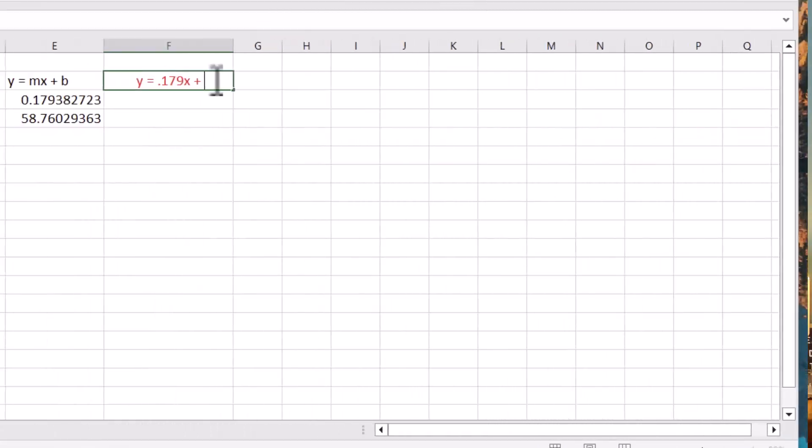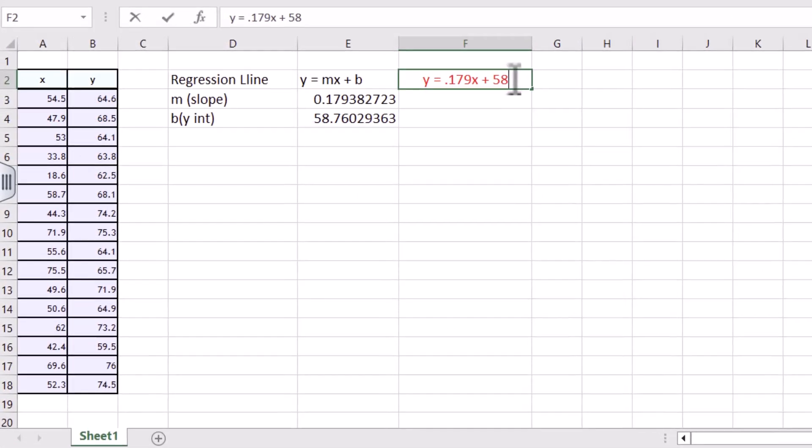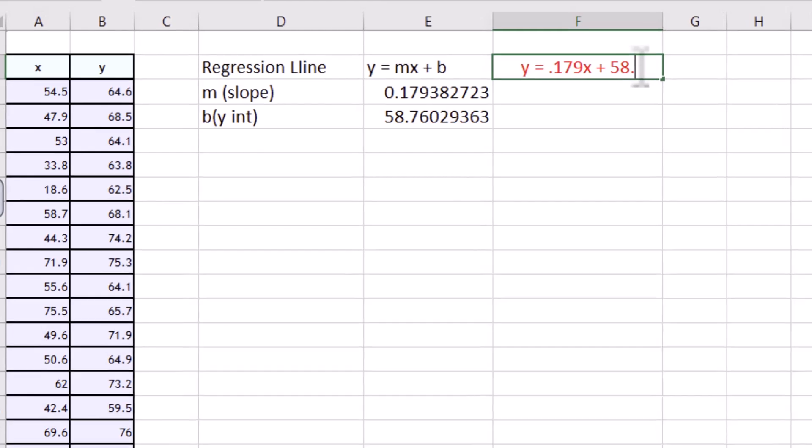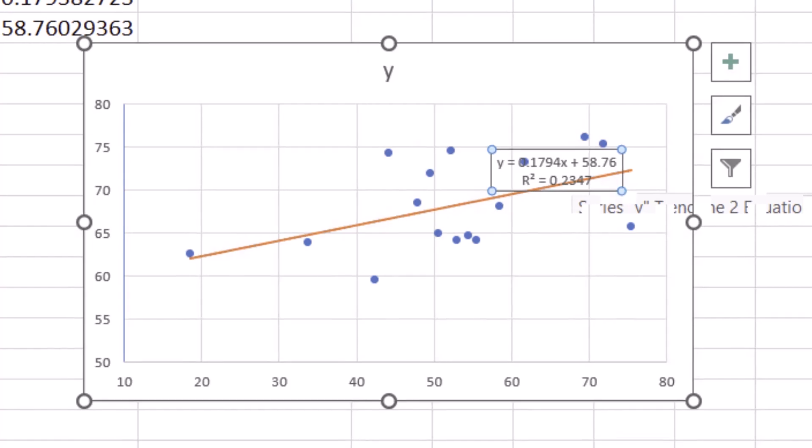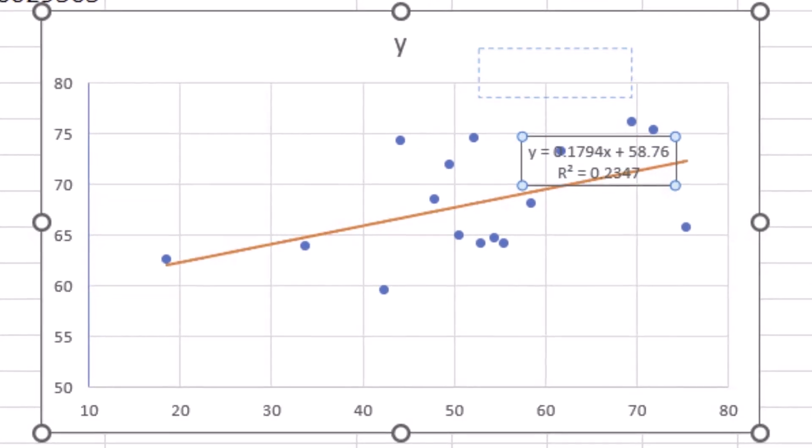There is a much faster and easier way to find the equation of a best fit line in Excel that most people don't know about. I'm going to show you how to do that first and then I'm going to show you the really cool way of finding a best fit line in Excel with the scatter plot and a trend line. Let's go ahead and dive in.